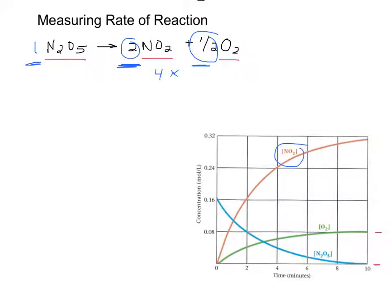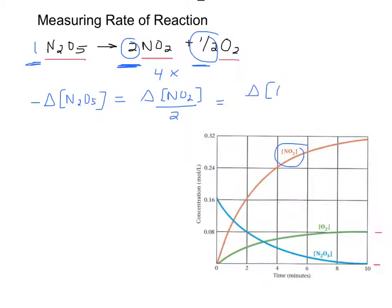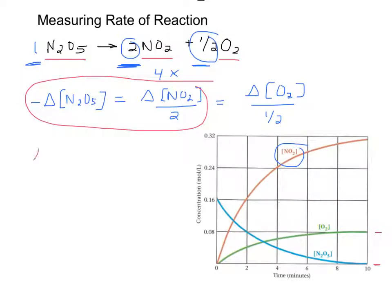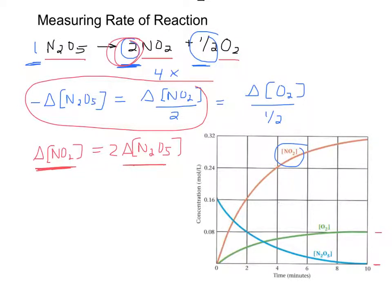We can write this as changes in concentration. So minus the change in concentration of N2O5 — minus, because it's a reactant and it's being used up — equals the change in concentration of NO2 over 2, equals the change in concentration of O2 over a half. If I rewrote that, you would see that the change in concentration of NO2 is two times the change in concentration of N2O5, which makes sense. This concentration is going to change twice as fast because of the stoichiometry of your reaction.